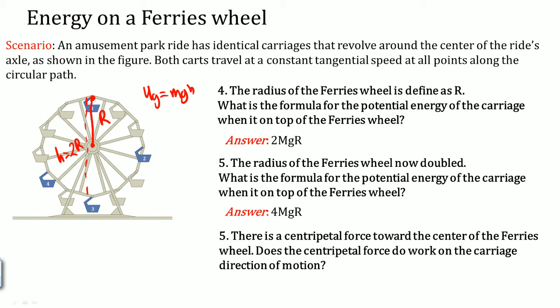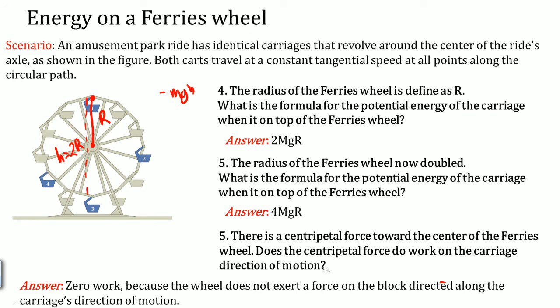There is a centripetal force towards the center of the Ferris wheel. Does the centripetal force do work on the carriage in the direction of motion? The system is closed, so work equals zero. Work is defined as force times distance — since work is zero and distance changes, the force does zero work. Zero work because the wheel does not exert a force on the carriage directly along the carriage's direction of motion.